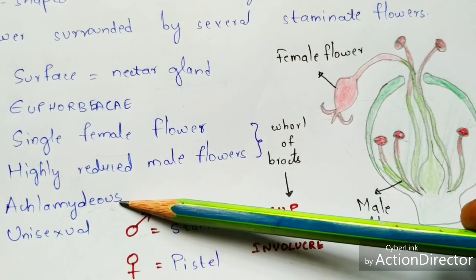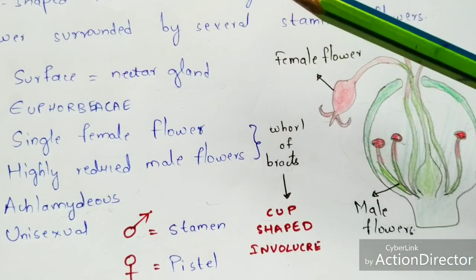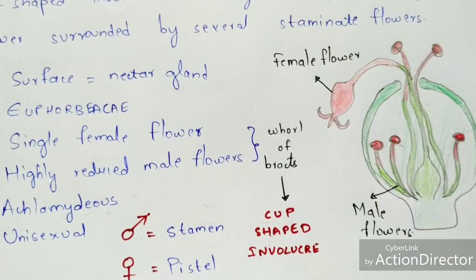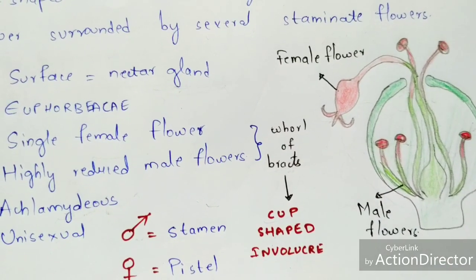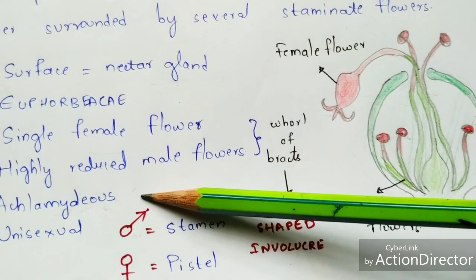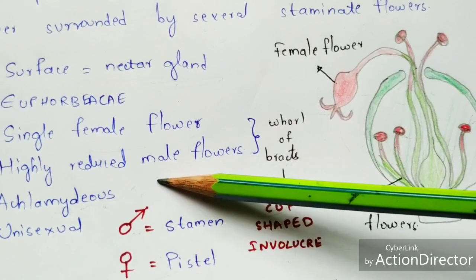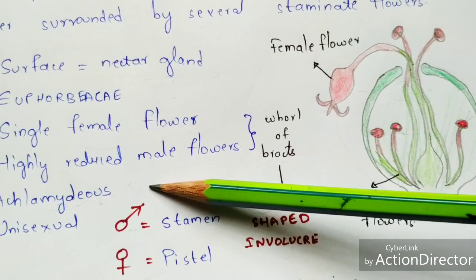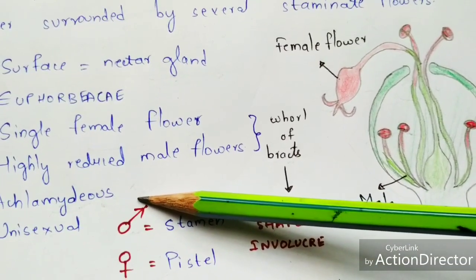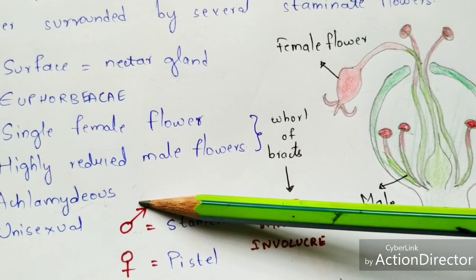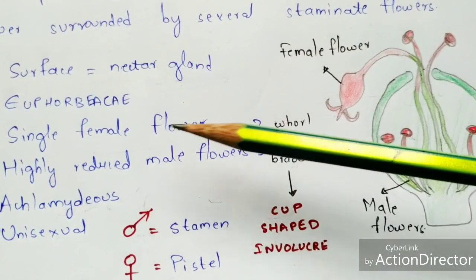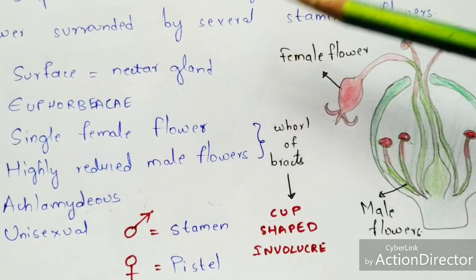In this inflorescence, it undergoes an achlamydous condition. Achlamydous means the calyx and corolla — which are called accessory whorls — will be absent. I will make another video on calyx and corolla. Achlamydous condition is when calyx and corolla are absent, whereas chlamydous condition is when calyx and corolla are present.